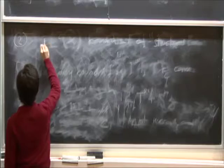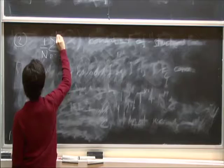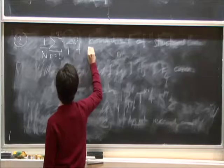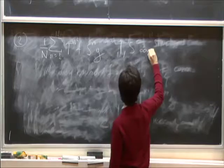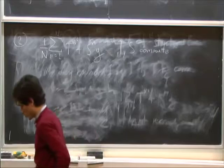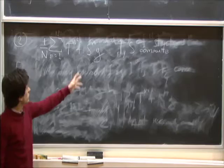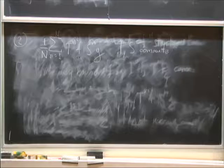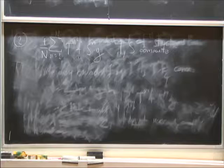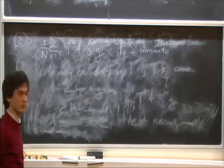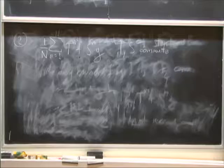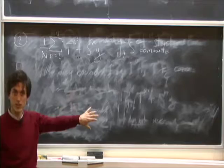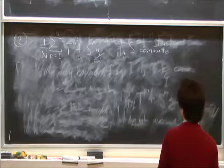Let's consider a particular ergodic average. We will focus on this particular case: we have two commuting transformations. You take one along the squares—T^{n²}—and another along the linear—S^n. You have two bounded functions, F and G. The ideas are pretty much the same as in the general case.